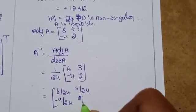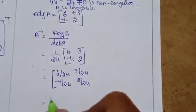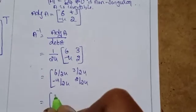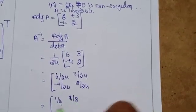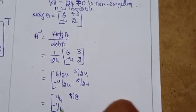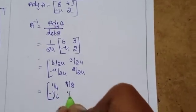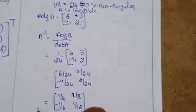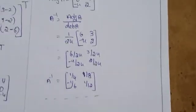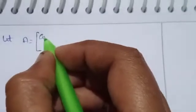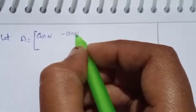So the values are: 6/24, 3/24, minus 4/24, and 2/24, which gives 1/4, 1/8, minus 1/6, 1/12. This is the A inverse matrix. Next, the second problem: let A equal to the matrix with cos alpha, minus sin alpha, sin alpha, cos alpha.